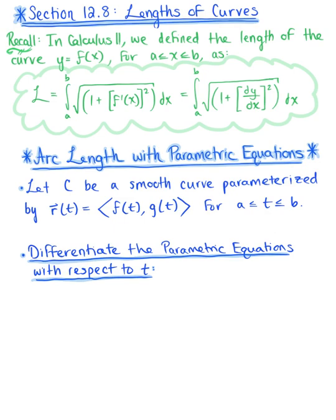Since a natural extension exists from R2 to R3, let's begin by deriving the formula in R2, and then we'll look at how this extends into space. Arc length with parametric equations. Let C be a smooth curve parametrized by the vector-valued function r(t) with components f(t), g(t), on a closed interval from a to b.